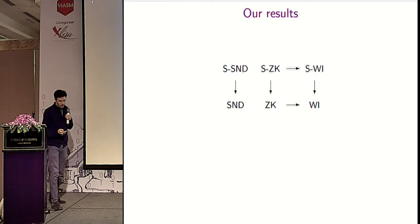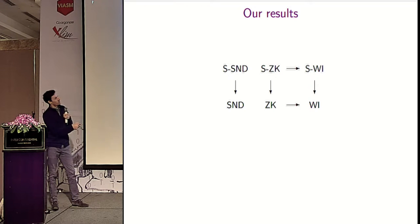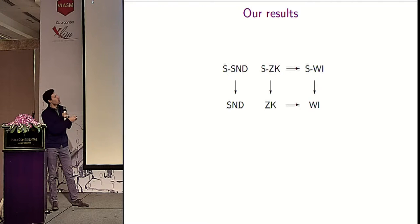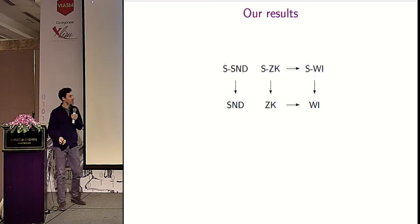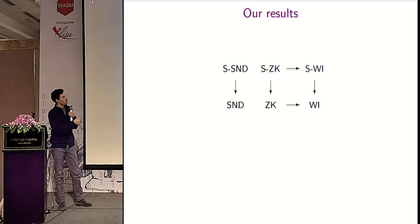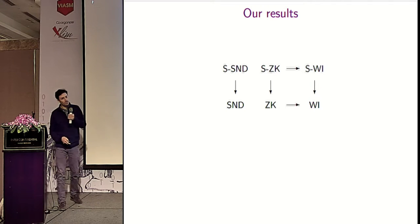Our results involve six notions: the classical ones — soundness, zero knowledge, and witness indistinguishability — and our three new subversion notions: subversion soundness, subversion zero knowledge, and subversion witness indistinguishability. We show that the subversion versions imply the original versions, and any zero knowledge version implies witness indistinguishability.